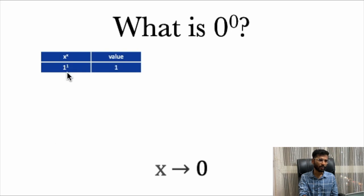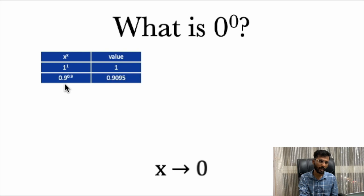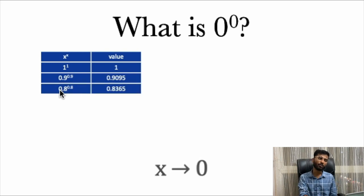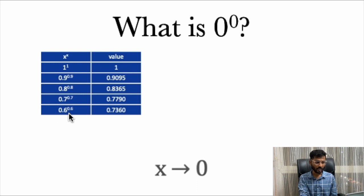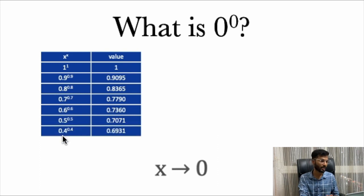Let's start with 1, that is 1^1 which equals 1. Then 0.9^0.9 is 0.9095. 0.8^0.8 is 0.8365. 0.7^0.7 is 0.7790. We can see it is reducing. 0.6^0.6 is 0.7360. 0.5^0.5 is reducing gradually. 0.4^0.4 is 0.6931. I can see that it's reducing and maybe it's going to be 0 because it's getting reduced. Maybe 0.5 and so on, we have to check for the further numbers.